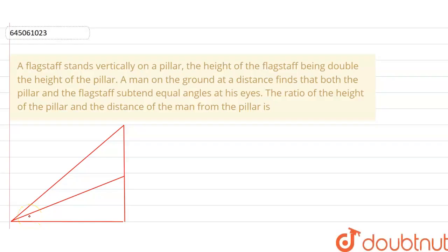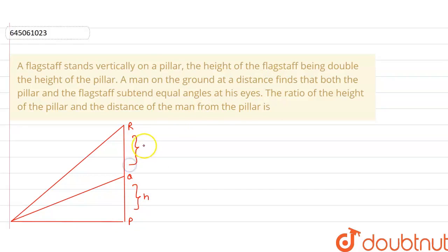Hello friends, here we have a question: a flagstaff stands vertically on a pillar, the height of the flagstaff being double the height of the pillar. In our diagram, PQR — QR is the height of the pillar, and the flagstaff above it is equal to double the height of the pillar. A man on the ground is at a distance such that both the pillar and the flagstaff subtend equal angles at his eyes.